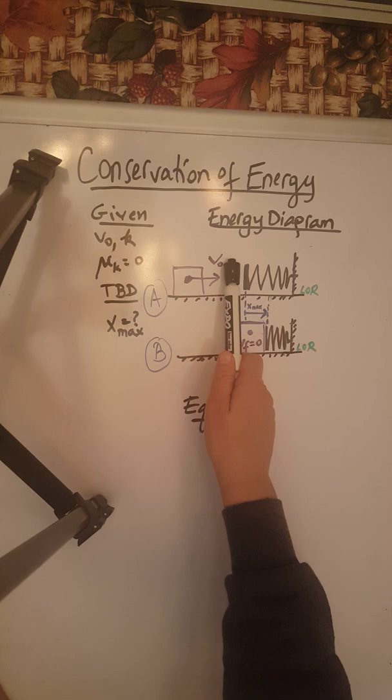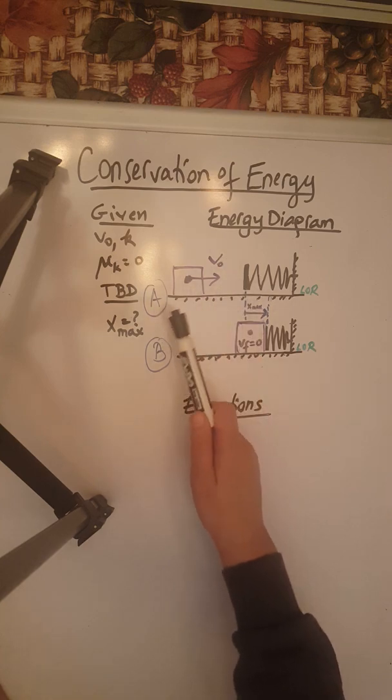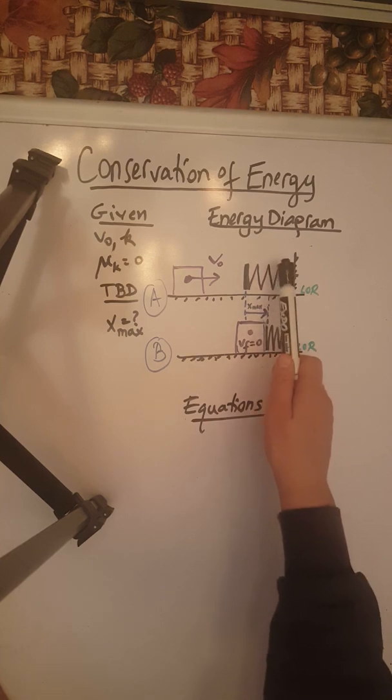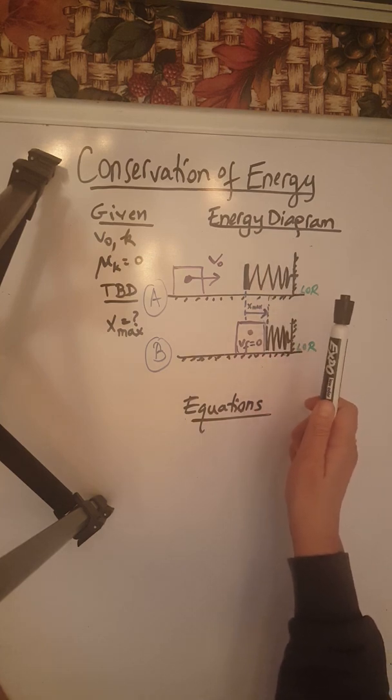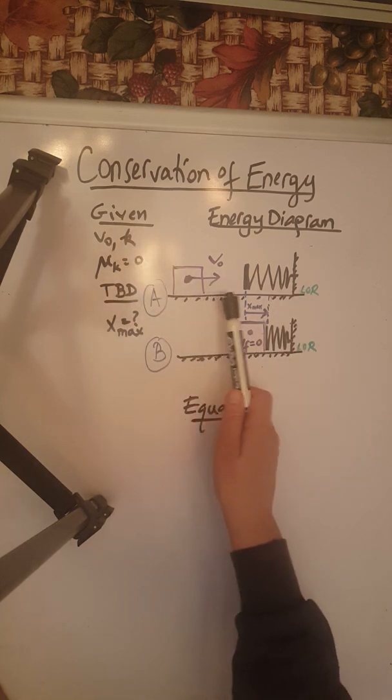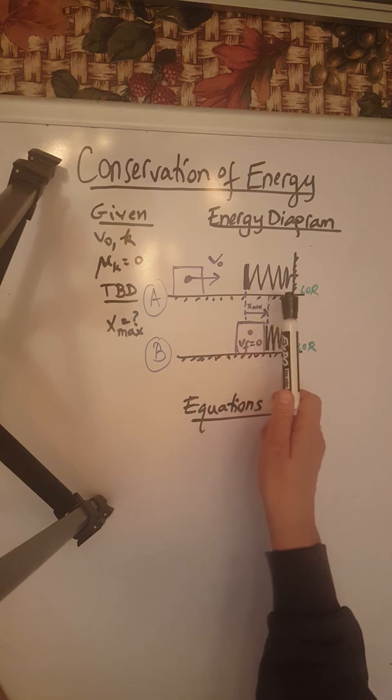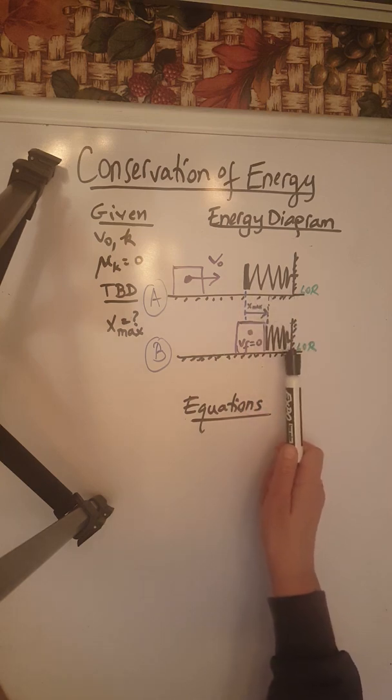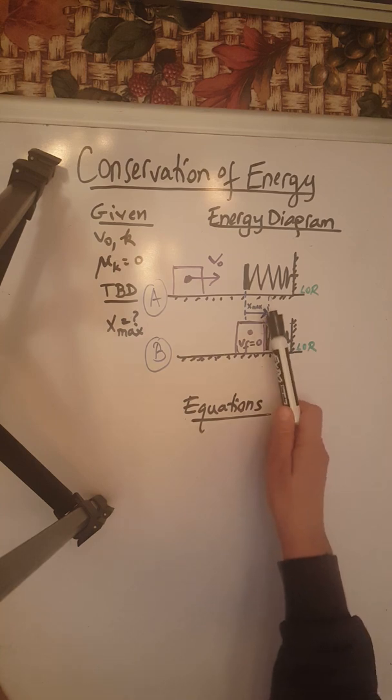The object moves with speed v-naught to the right and at some point will come in contact with a spring whose stiffness or spring constant is little k. Once it starts pushing the spring, the spring will compress until it reaches its maximum compression, x max.